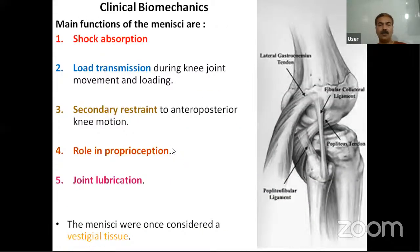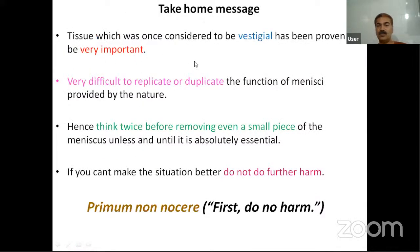The basic functions of the menisci are: shock absorption, load transmission, secondary restraint, proprioception, and joint lubrication. The menisci were once considered vestigial tissue, but they have been proven to be very important and very difficult to replicate. The take-home message is: think twice before removing even a small piece of meniscus. If you can't make the situation better, do not do further harm. Thank you.